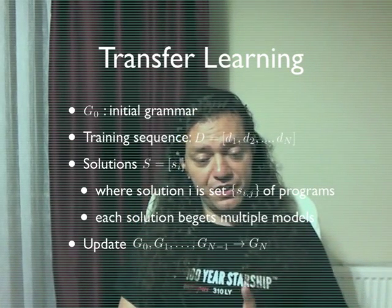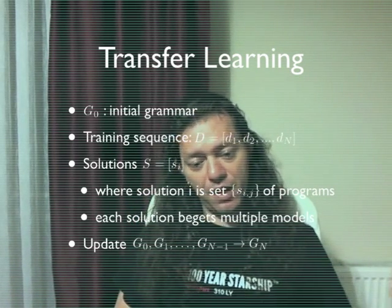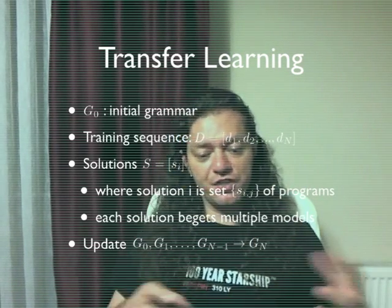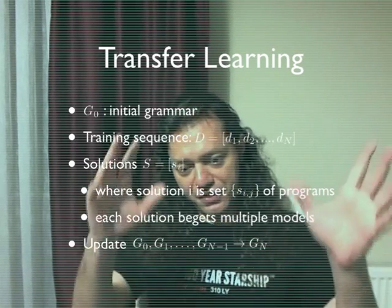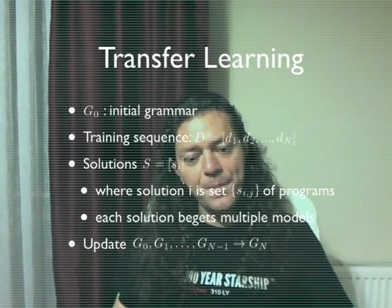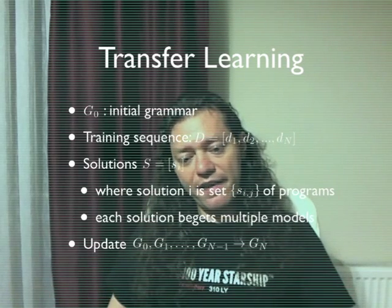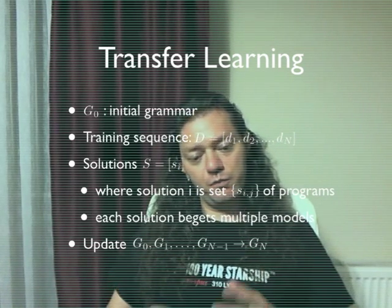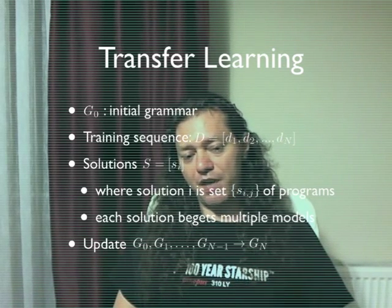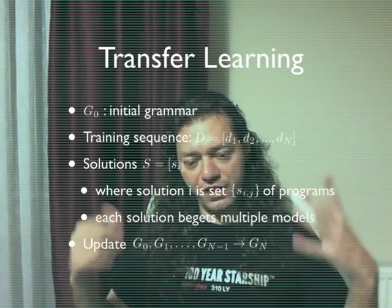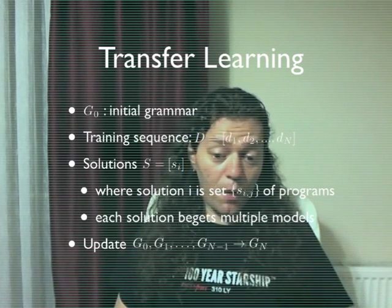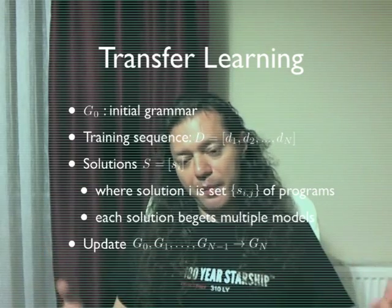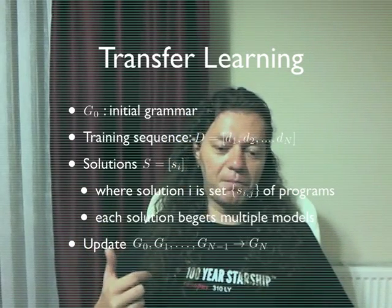What we have here is G0 up to Gn-1, the sequence of grammars, and we use this information together with the data to derive a new grammar Gn. That is basically the update problem. You can use all the history, but you have to come up with a Gn that represents the operator probabilities better than Gn-1.